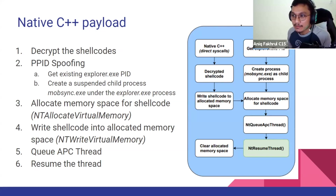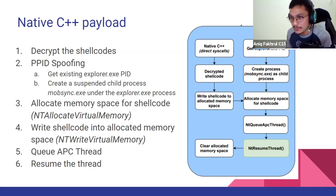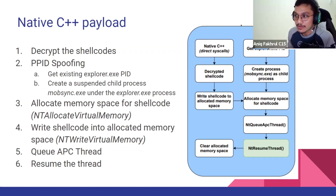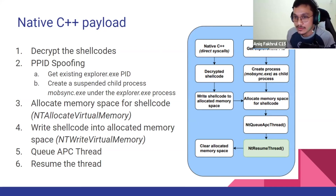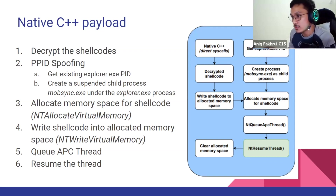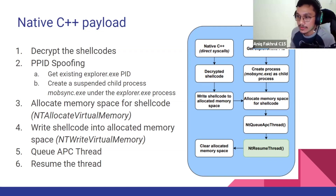After decryption, the payload does PPID spoofing. PPID spoofing means I create a decoy process — for example explorer.exe — take its PID, and create a malicious process under mmc.exe, injecting shellcode into mmc.exe and spawning it as a child of explorer.exe. Then I allocate memory space for the shellcode using NtAllocateVirtualMemory, write the shellcode into the allocated memory using NtWriteVirtualMemory, queue an APC thread using NtQueueApcThread, and resume the suspended thread using NtResumeThread.